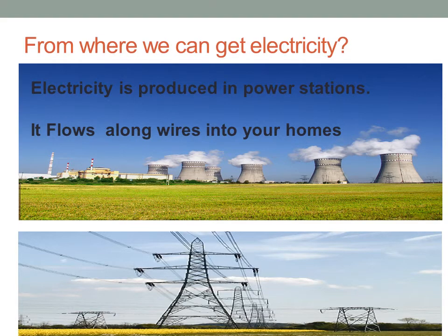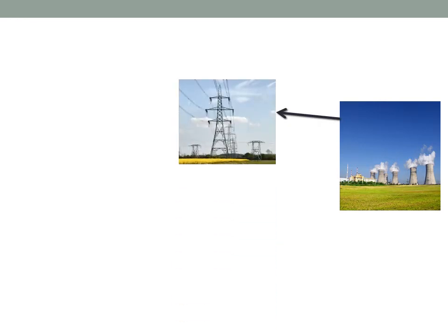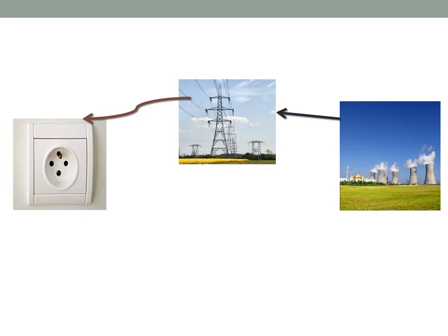The question here is: from where can we get electricity? Electricity is produced in a power station. Look at the picture — this is called a power station, and the electricity is moved from this power station through wires, or power lines, that enter your home. And this here is called the socket.